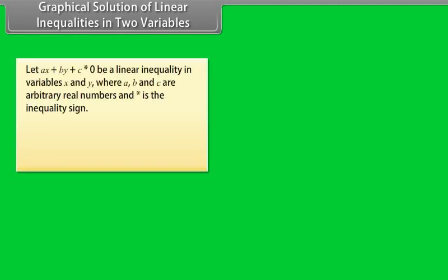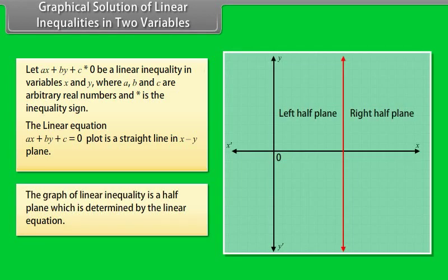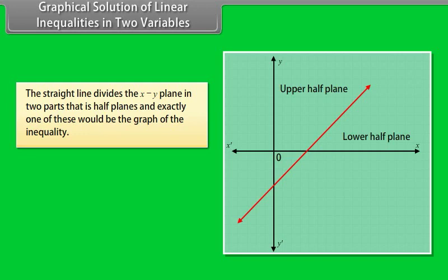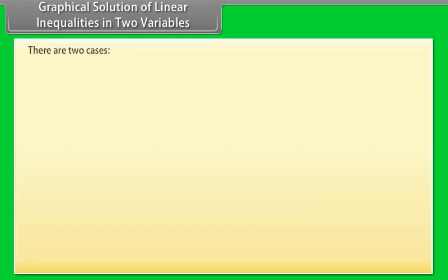Graphical solution of linear inequalities in two variables. Let Ax + By + C ⋆ 0 be a linear inequality in variables x and y, where A, B, and C are arbitrary real numbers and ⋆ is the inequality sign. The linear equation Ax + By + C = 0 plots as a straight line in the xy-plane. This line divides the xy-plane into two half-planes, and exactly one of these would be the graph of the inequality. To decide which half-plane is the solution, we take an arbitrary point P(h, k). There are two cases.